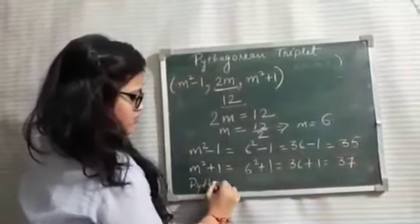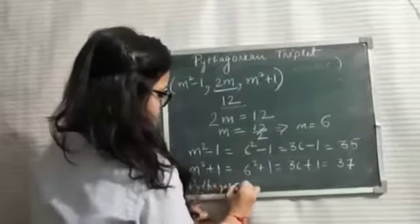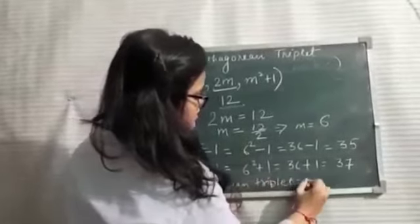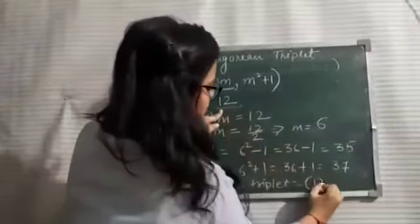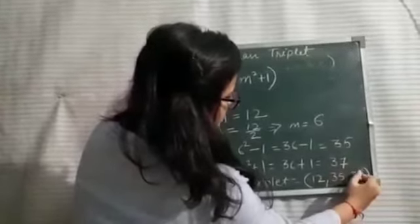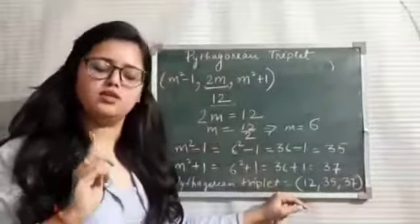So, in the last, you have to mention the Pythagorean triplet. This is equal to, one of the members was already given 12, and the other two are 35 and 37. This is how we find out the remaining two members of the Pythagorean triplet.